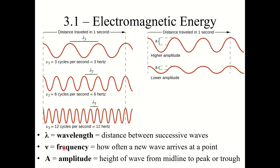The second term is frequency. Frequency uses the variable nu — the Greek letter nu, n-u — which basically looks like a curvy V. Frequency is defined as how often a new wave arrives at a point. For example, if three cycles pass through in one second, that wave would have a frequency of three hertz.